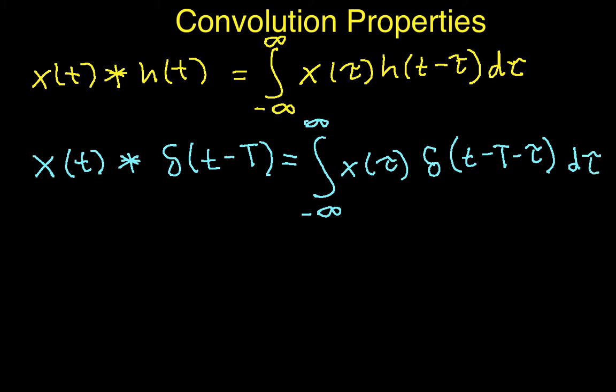So, all I've done here is, instead of h of t minus tau, I've taken delta of its argument, which is t minus cap T, plug this in for t, change this guy to a delta, and we then get this result here.